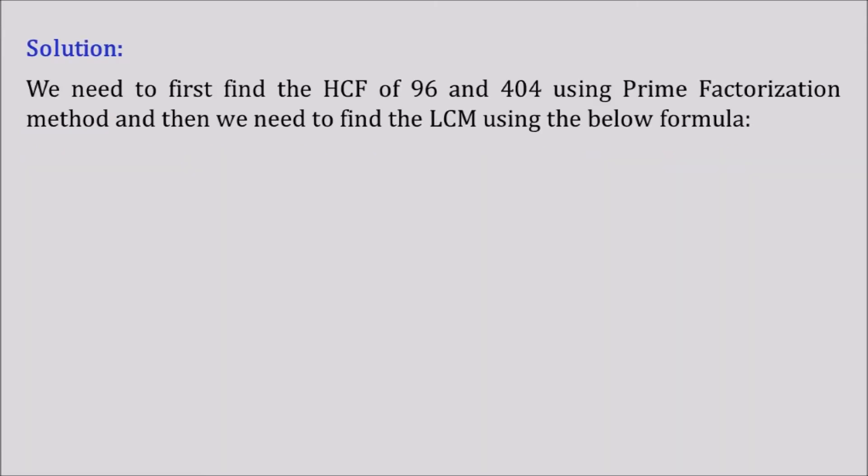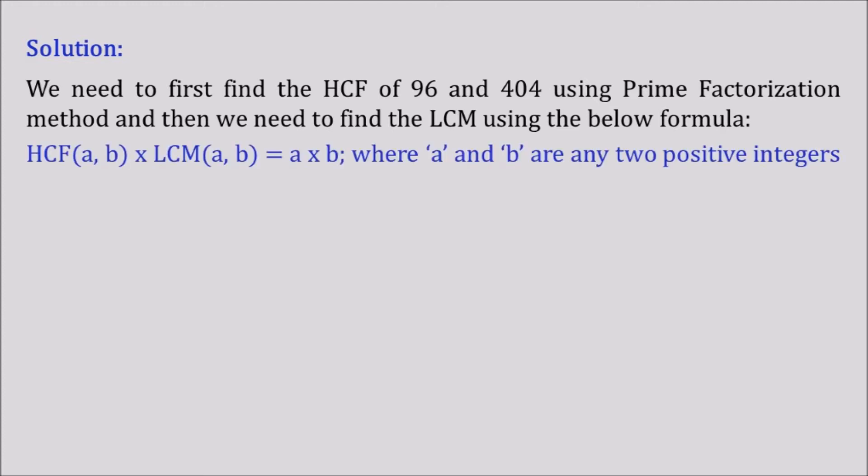Let's see how we can solve this question. We need to first find the HCF of 96 and 404 using the prime factorization method, and then find the LCM using the formula: HCF of two numbers (a, b) multiplied by LCM of (a, b) is equal to a × b, where a and b are any two positive integers. We need to keep this formula in mind throughout this chapter.